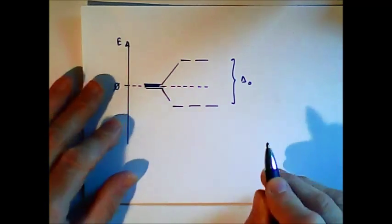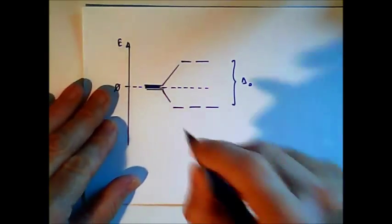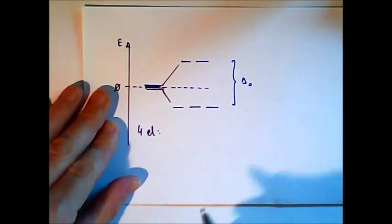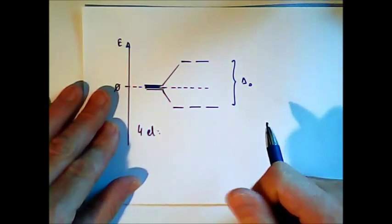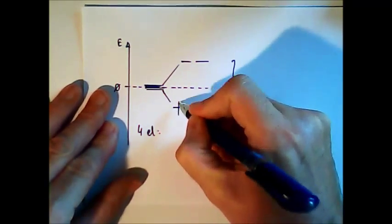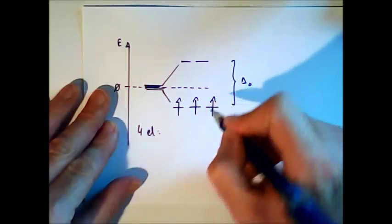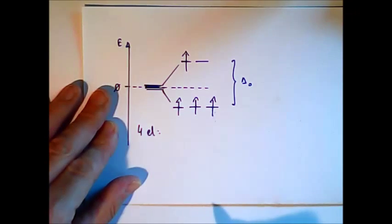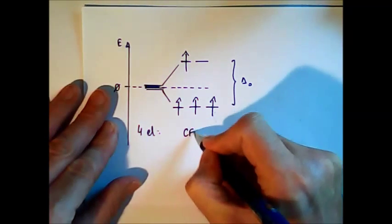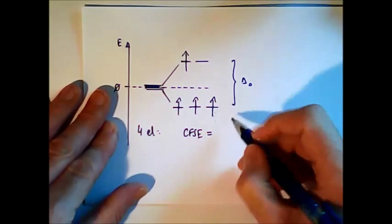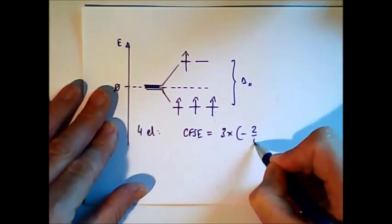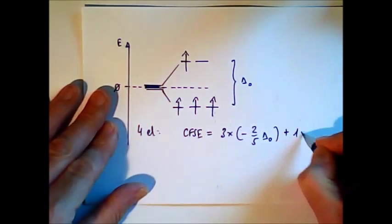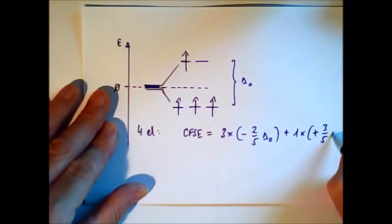When we have 4 or more electrons, the situation becomes more complicated. For 4 electrons we can have 2 configurations. We have the so-called high spin case, where the electrons distribute over all orbitals. In this case, the crystal field stabilization energy is 3 times minus 2 over 5 delta-O, plus 1 times plus 3 over 5 delta-O.